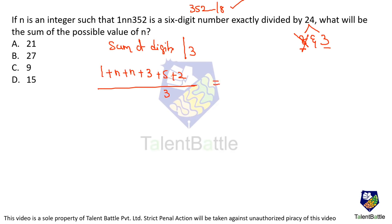What is the sum we get? 3 plus 5 is 8, 8 plus 2 is 10, 10 plus 1 is 11. So we have 11 plus 2n. This expression 11 plus 2n should be divisible by 3.